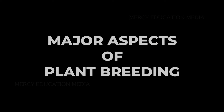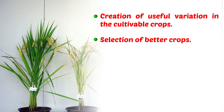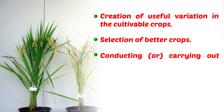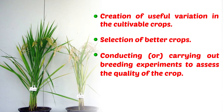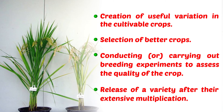The major aspects of plant breeding include the creation of useful variation in cultivable crops, the selection of better crops, conducting breeding experiments to assess the quality of the crop, and release of a variety after their extensive multiplication.